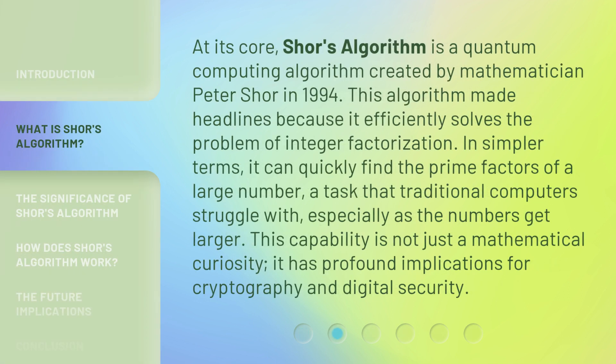At its core, Shor's Algorithm is a quantum computing algorithm created by mathematician Peter Shor in 1994. This algorithm made headlines because it efficiently solves the problem of integer factorization. In simpler terms, it can quickly find the prime factors of a large number — a task that traditional computers struggle with, especially as the numbers get larger. This capability is not just a mathematical curiosity; it has profound implications for cryptography and digital security.